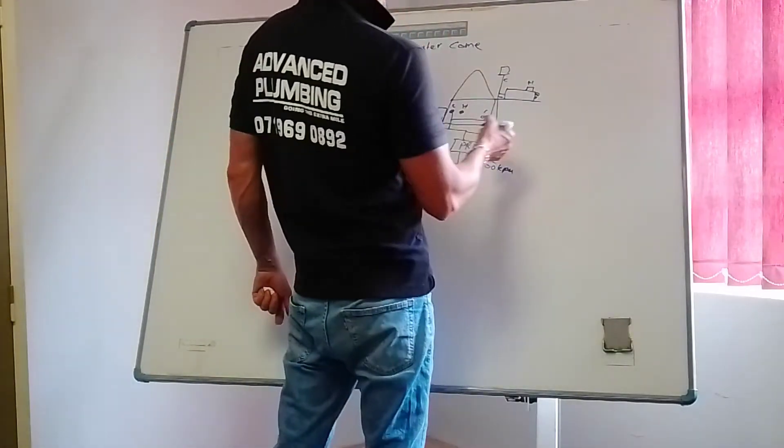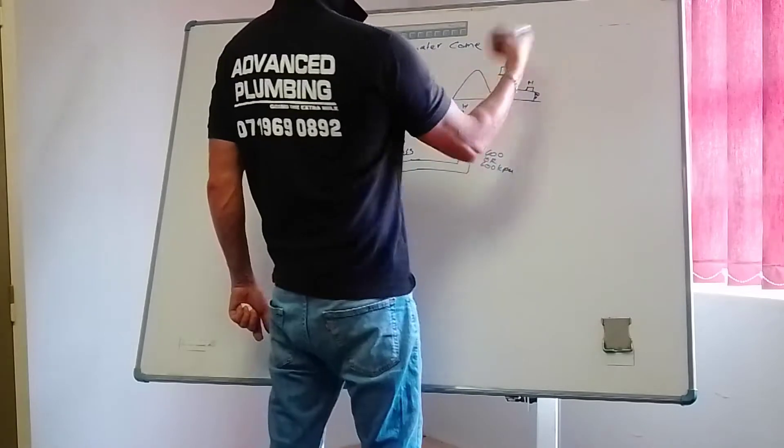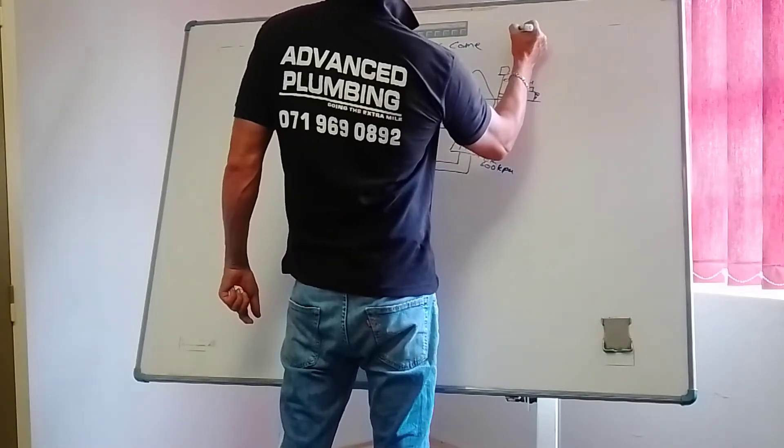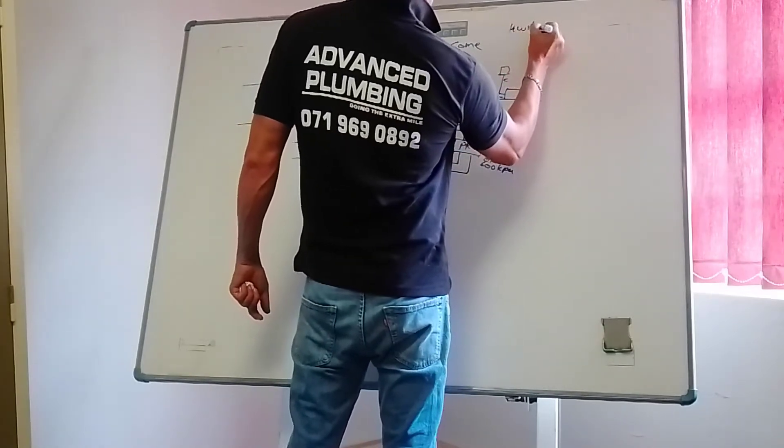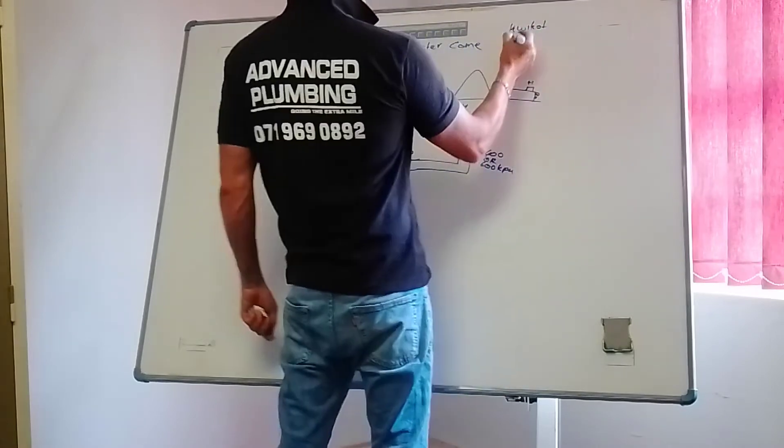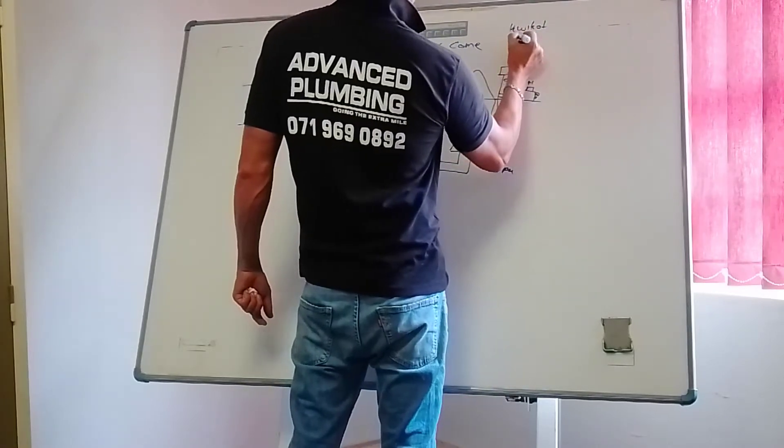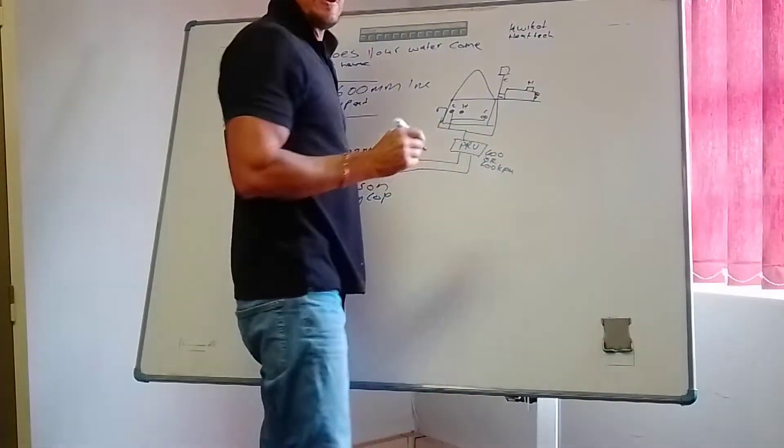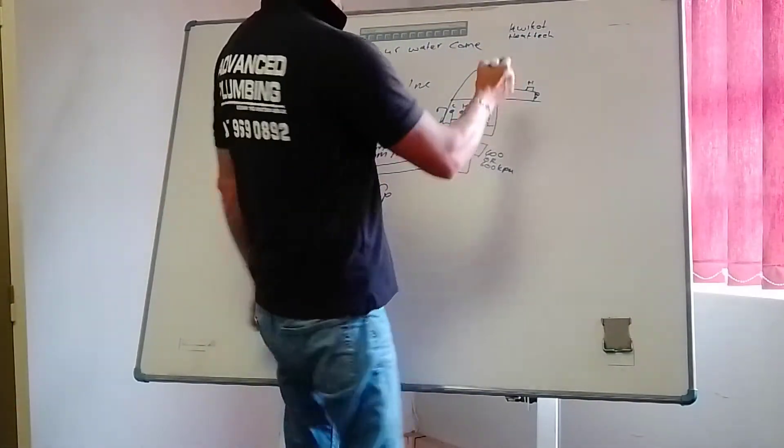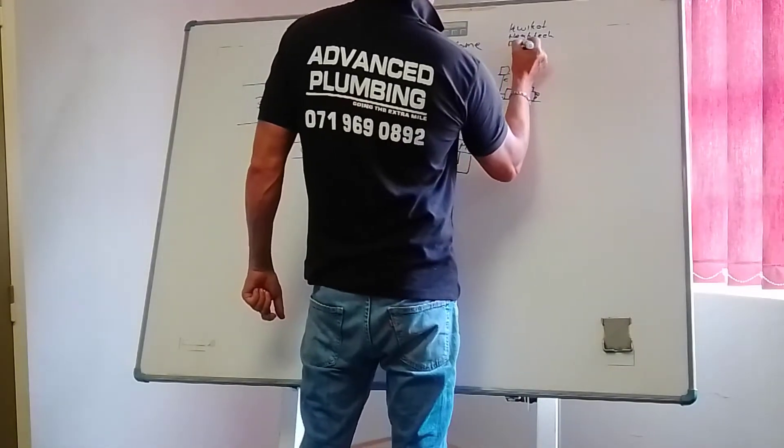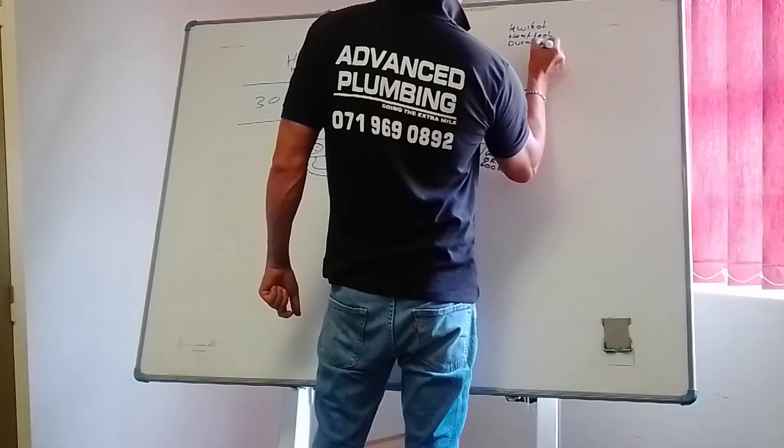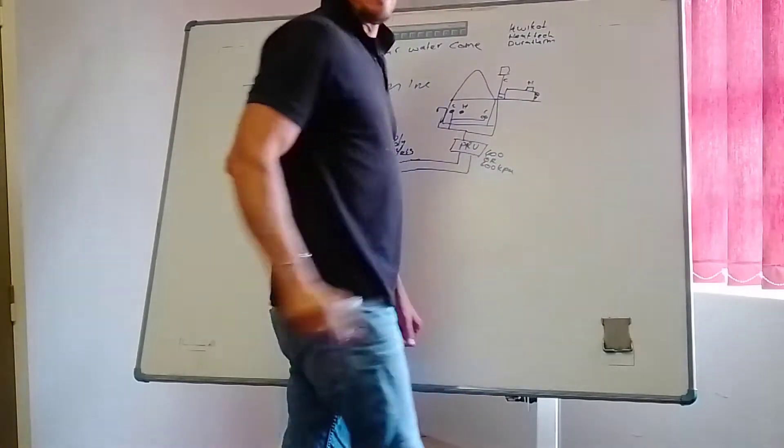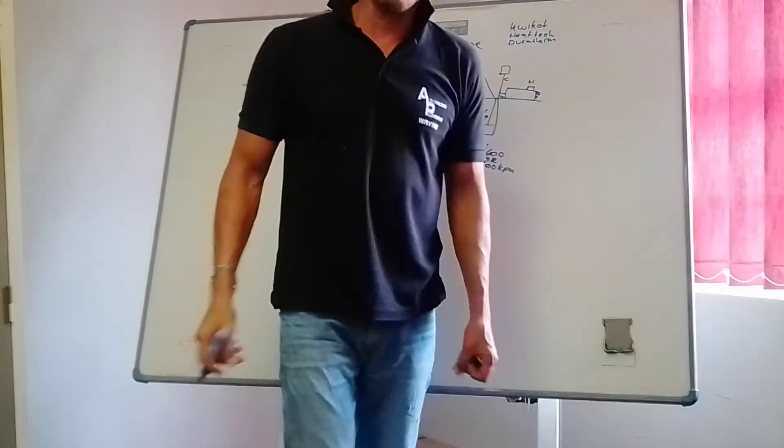22 millimeter copper piping in more modern houses or 15 millimeter, but suggested 22 millimeter copper piping. On your geyser you get different types of geyser - could be Kwikot, heat tech, or it could even be Durable. We'll discuss in another video exactly what's the law requirements on replacing a new geyser and why you need to be a qualified plumber to do that and why you require a COC.